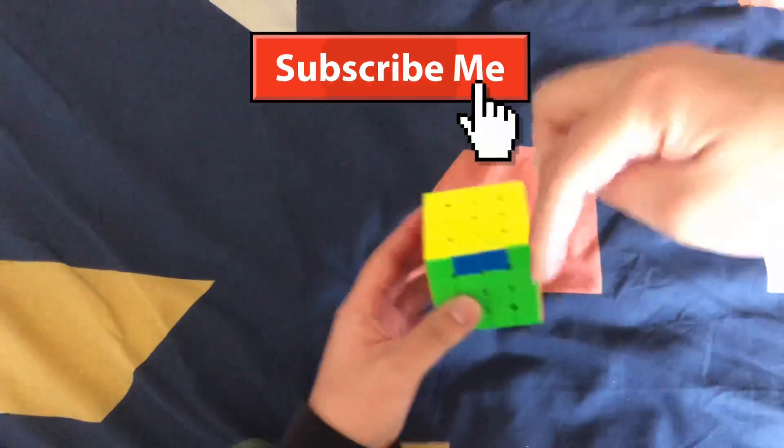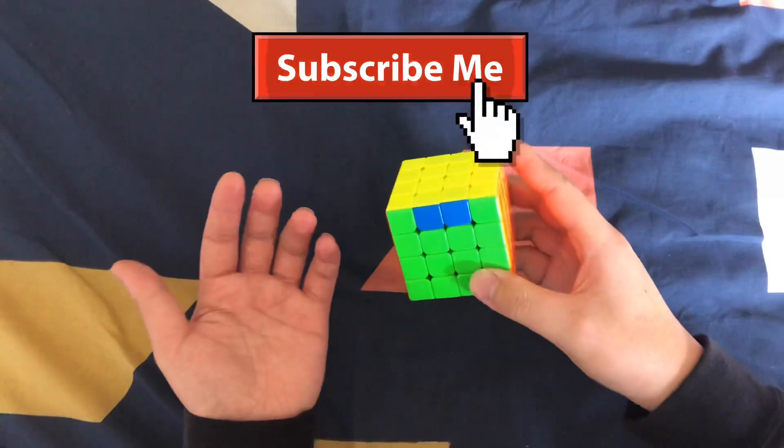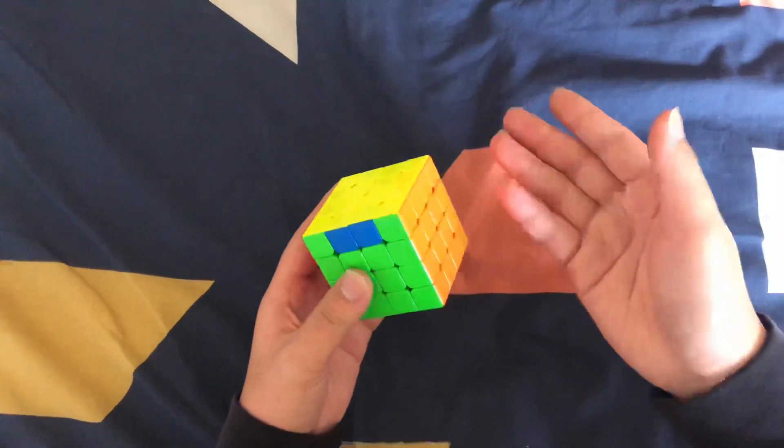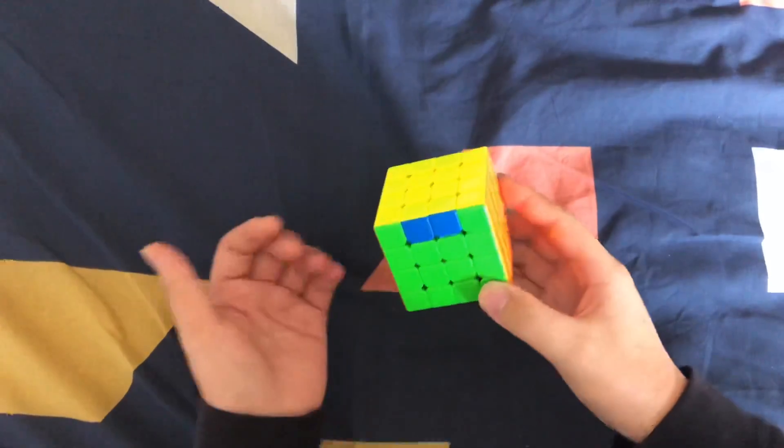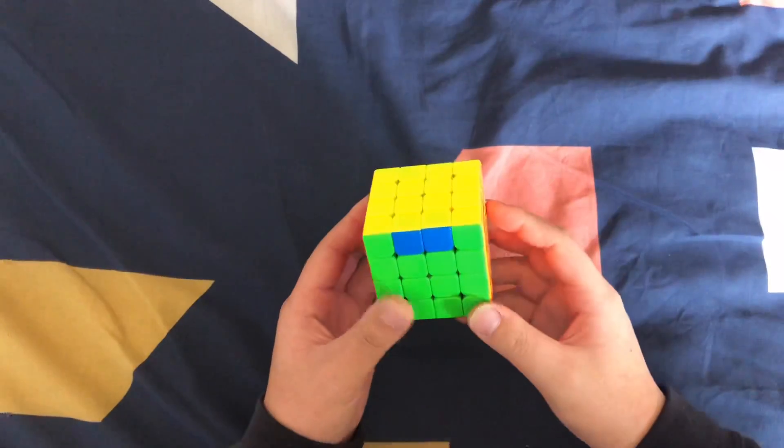Before we start, make sure you make the subscribe button grey as I make new cubing content every single day, and make sure you leave some suggestions on what you want to see. Alright, once we got that out of the way, let's get started with PLL parity.